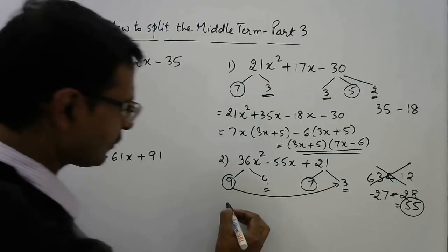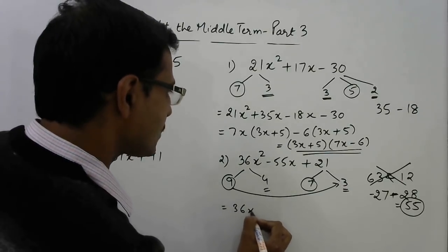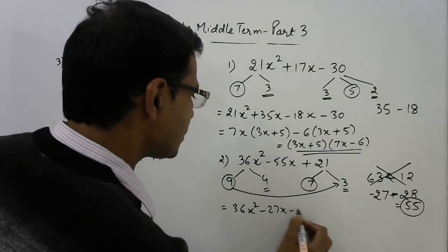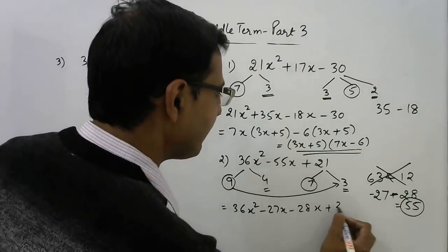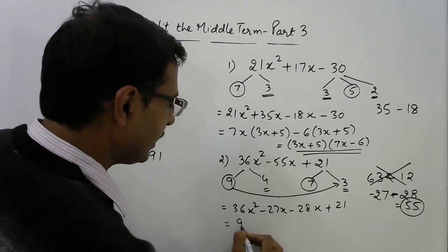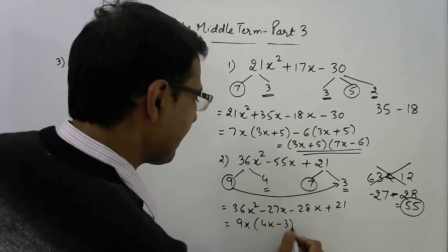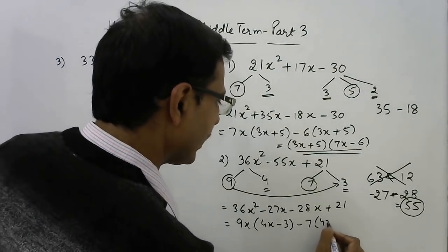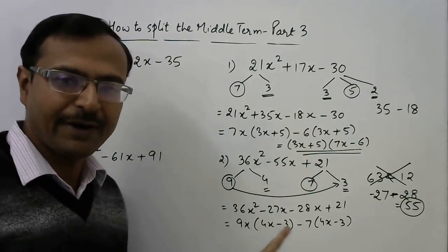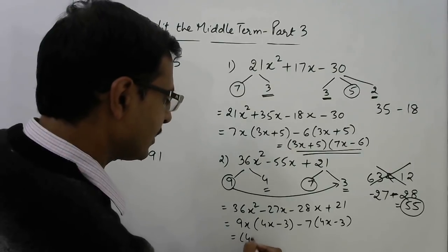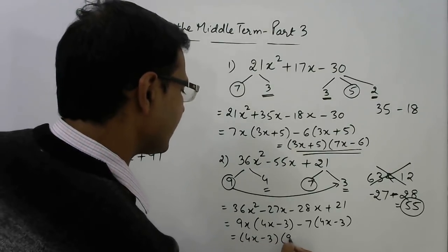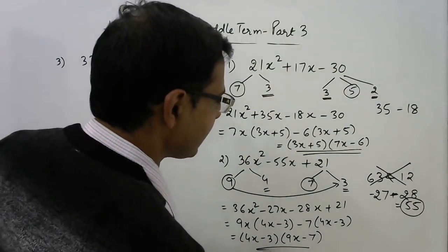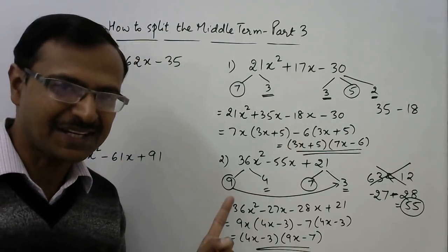So let me just factorize it for you now. So 36x² minus 27x minus 28x plus 21 and now take common 9x. So 4x minus 3 minus 7, 4x minus 3 giving you the final form of this question. So in this question, the two factors are 4x minus 3 and 9x minus 7. That is the second question.